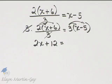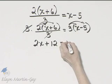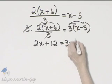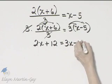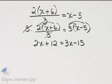and let's use the distributive property again. 3 times x is 3x minus 3 times 5 is 15, and now let's continue solving.